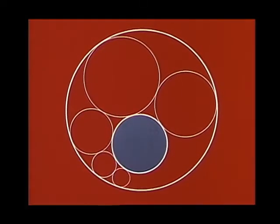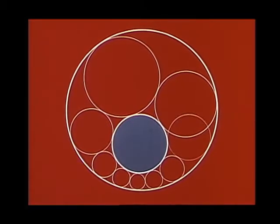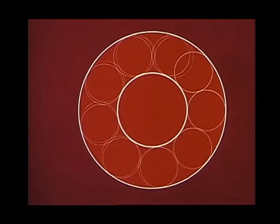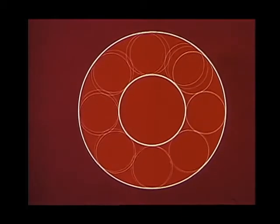The ring may close, with the last circle touching the first. The ring may not close. If we begin with two concentric circles, we see that the ring closes only if the radii of the concentric circles satisfy a certain relationship.